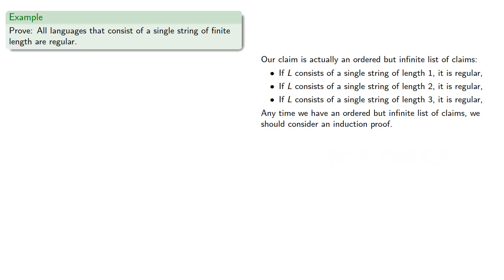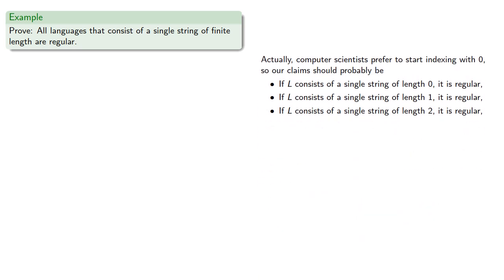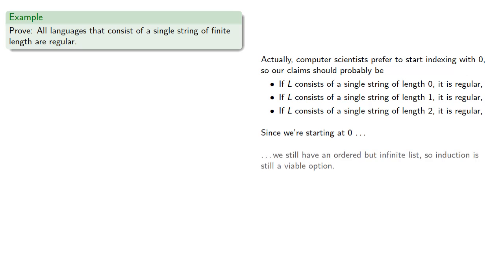Computer scientists prefer to start indexing with 0, so our claim should probably be: if L consists of a single string of length 0, it's regular, and so on. And since we're starting at 0, we still have an ordered but infinite list, so induction is still a viable option.